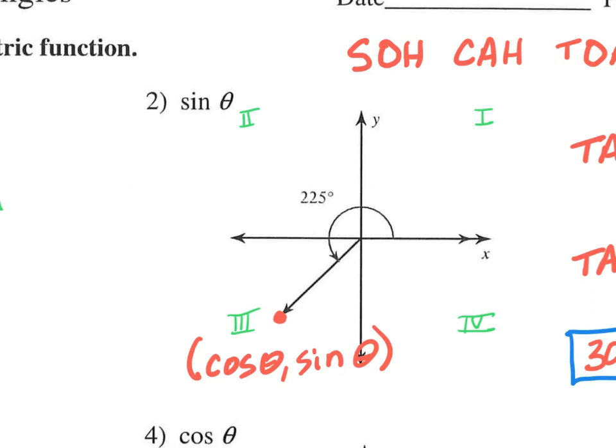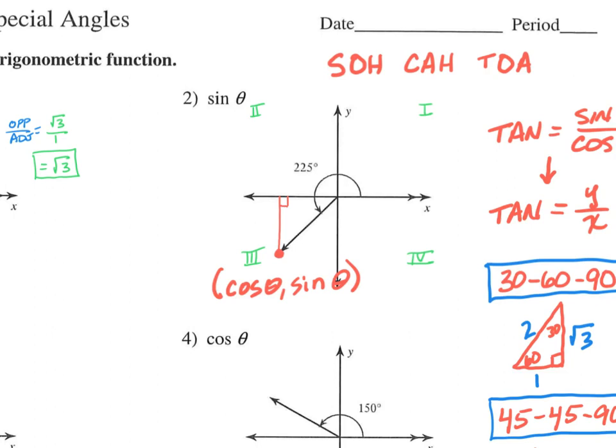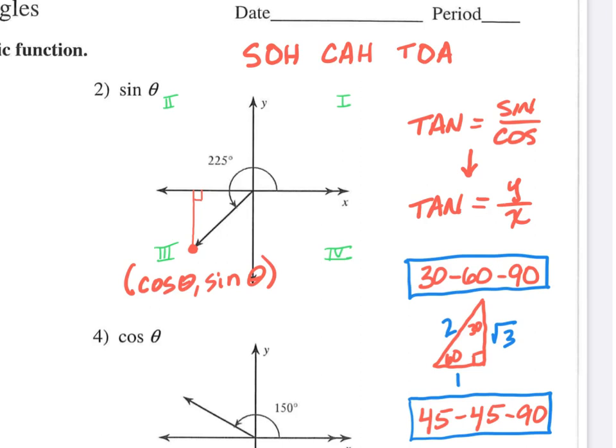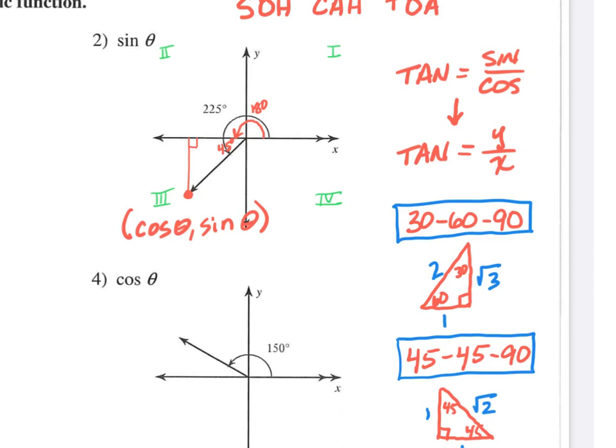So we still make our right triangle going directly to the x-axis. So there's our right triangle. Now we have to figure out, because we're dealing with triangles that are special right triangles, that's why it says values of special angles. They're either 45, 30, or 60 degrees. Because this is going 225, if we go just right to here, that's 180 degrees, that means this is another 45 degrees to get to 225.